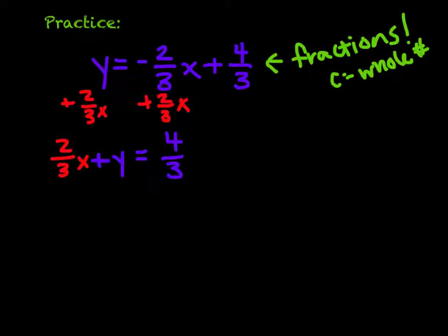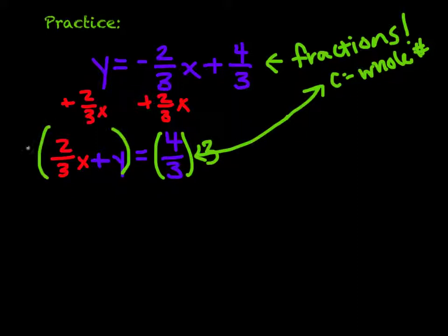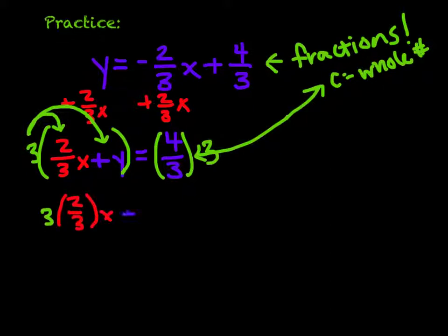And now here's that last step. Let's make this not be a fraction. Let's make it be a whole number. So how do I turn it into a whole number? Well, I could multiply it by 3 on this side. If I multiply one side by 3, I need to multiply everything else on the other side by 3 as well. I need to keep that proportionality. So that means I'm going to be distributing a 3 into both of these terms. So I will end up with 3 times 2 thirds x plus 3 times my y equals 4 thirds times 3.